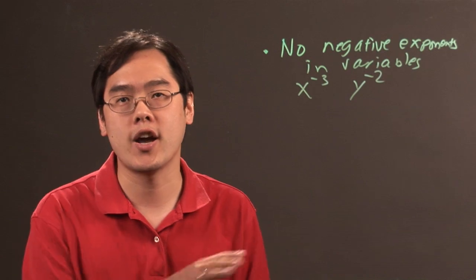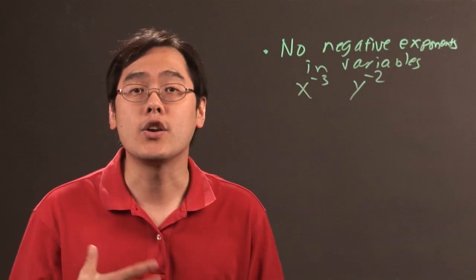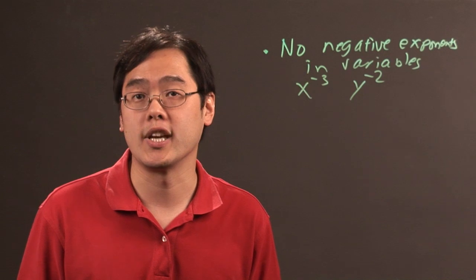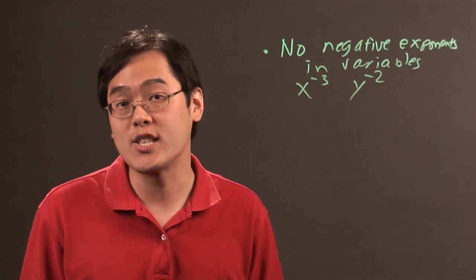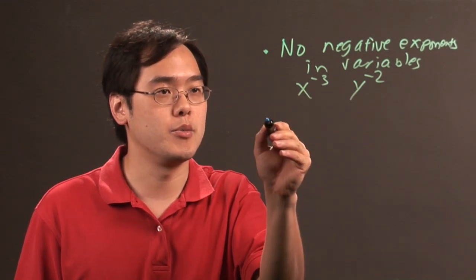If you have any terms like that, you're not going to have a polynomial as a result because of the criteria. You can have numbers raised to negative exponents like 2 to the negative 4, 5 to the negative 1, things like that. That's okay, but you cannot have negative exponents for the variables.